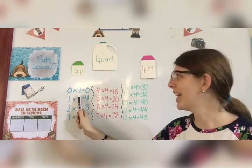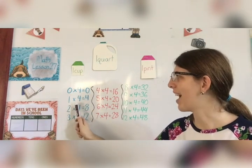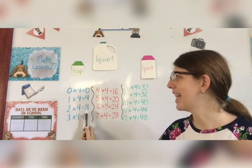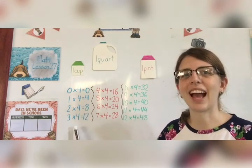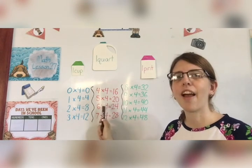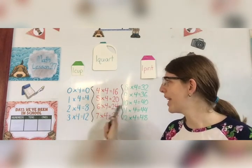0 times 4 equals 0. 1 times 4 equals 4. 2 times 4 equals 8. 3 times 4 equals 12. 4 times 4 equals 16. 5 times 4 equals 20.